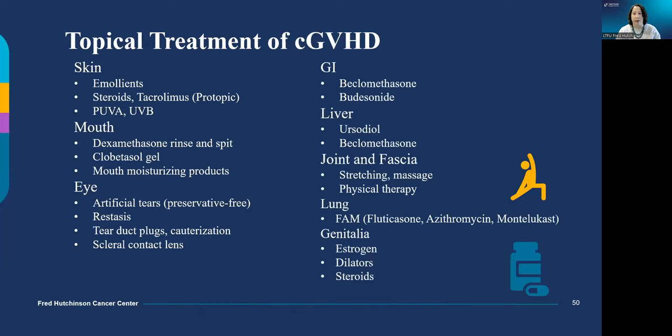We have topical therapies for about every body system. Topical interventions for the mouth and eyes are usually the most effective for those body systems. If you're using a steroid rinse for the mouth, hold the rinse in your mouth for several minutes to get surface contact, then spit it out instead of swallowing it. Also keep an eye out for thrush developing — that might be a white coating on your tongue and a bad taste in your mouth. Massage and stretching can be helpful to break up the fibrosis of chronic GVHD that tightens the skin and affects the joints, though massage can be painful while breaking up the fibrosis.